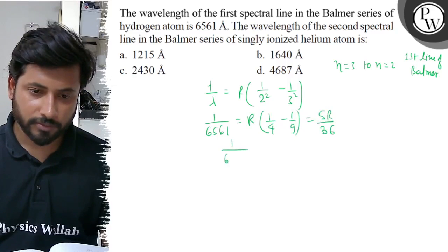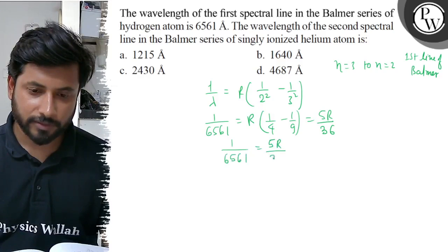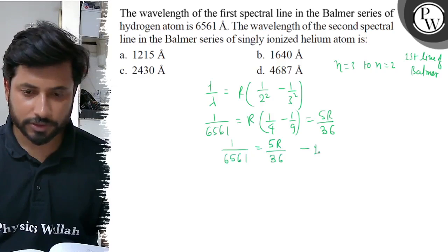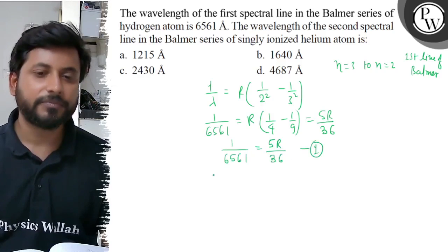So 1 by 6561 equals 5R by 36. This is equation number 1.